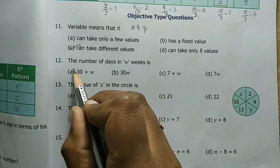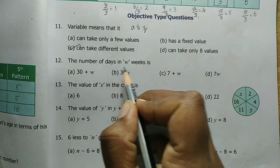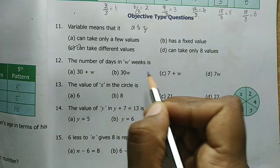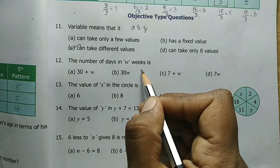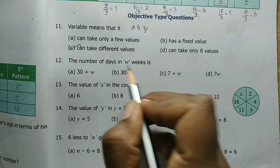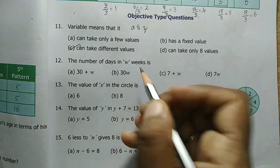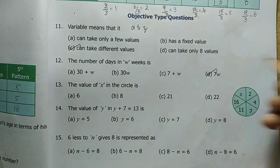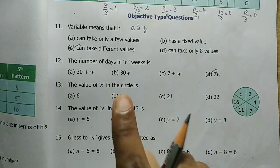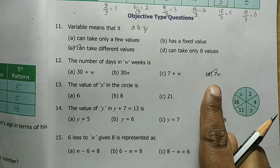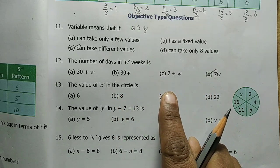Second one, the number of days in W weeks is dash. One week, how many days? Seven days. So here W week, we can take 7 into W, we can take 7 days.